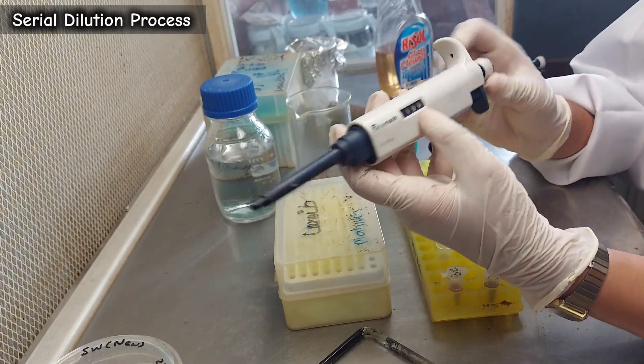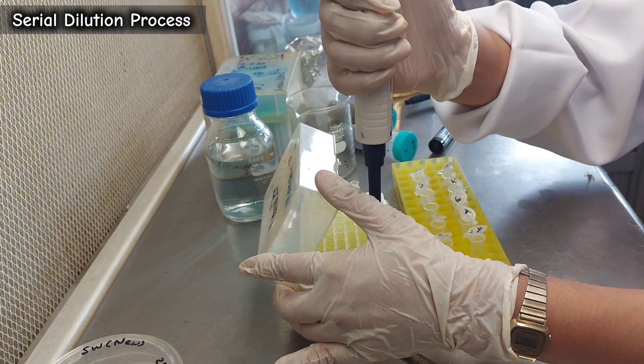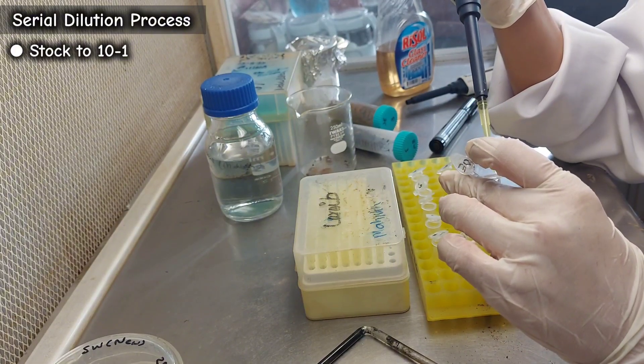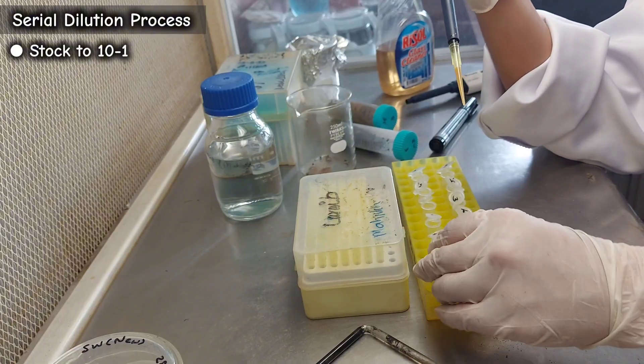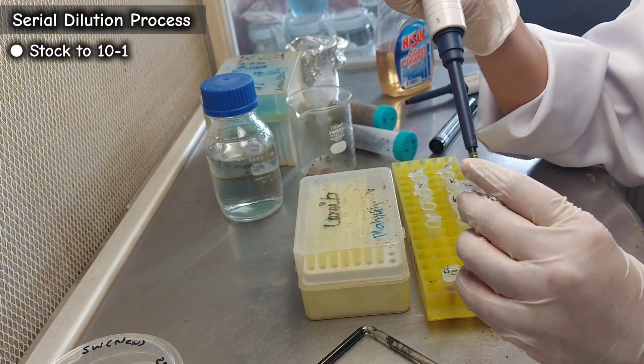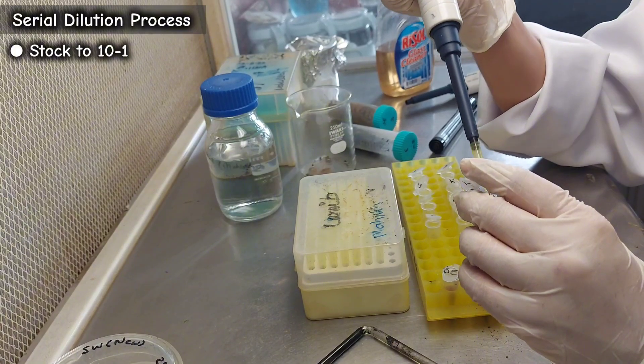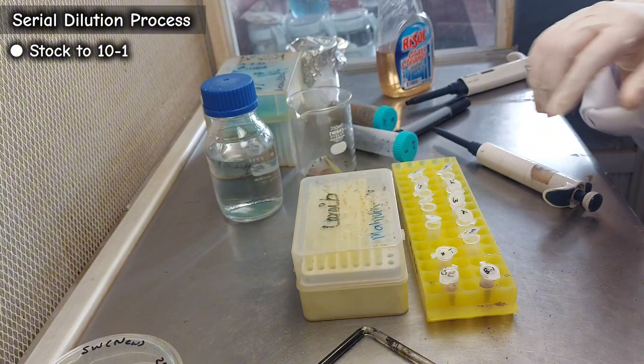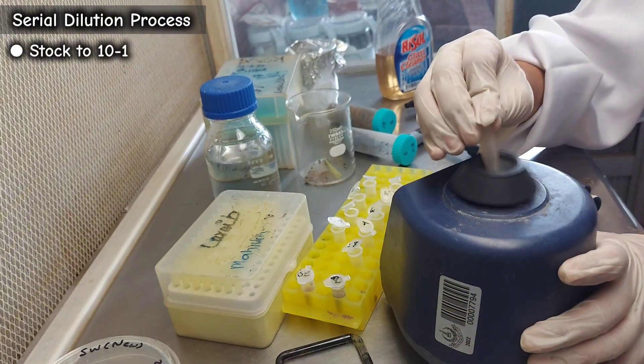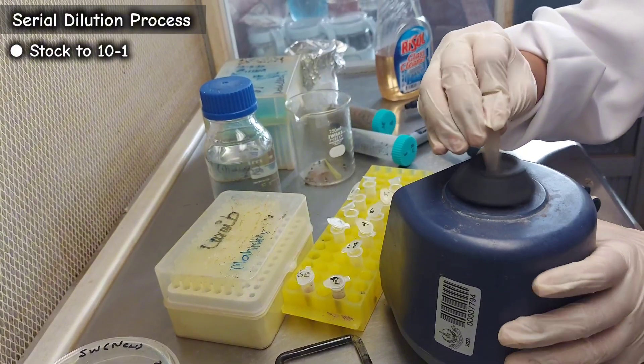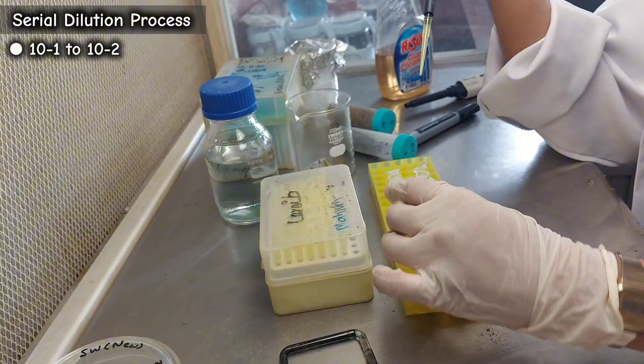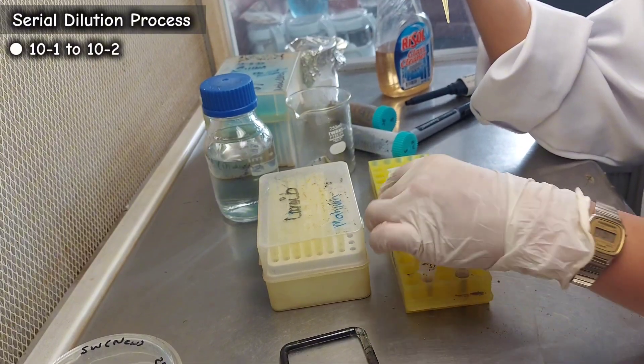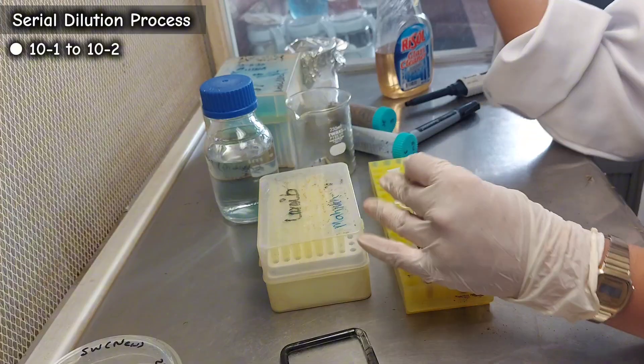After vortexing the stock sample, pipette out 100 microliters from the stock tube and transfer it into the first dilution tube labeled 10 to the power of negative 1. Mix the tube thoroughly by vortex. From the 10 to the power of negative 1 tube, transfer 100 microliters into the 10 to the power of negative 2 tube. Repeat this process up to the last dilution tube, ensuring proper mixing at each step.